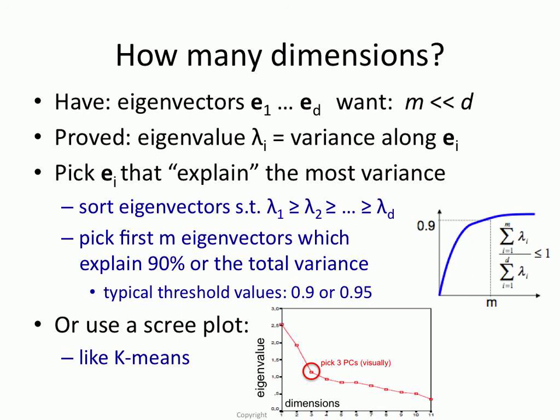You can pick out the stopping point in the same way we talked about for k-means. Look at it visually - where does the mountain and the rubble begin? This is a bit more principled.